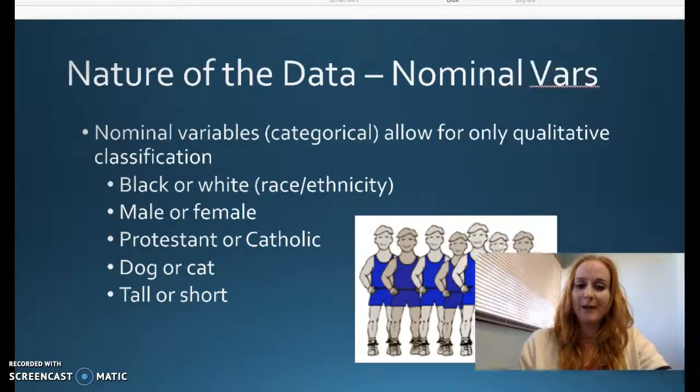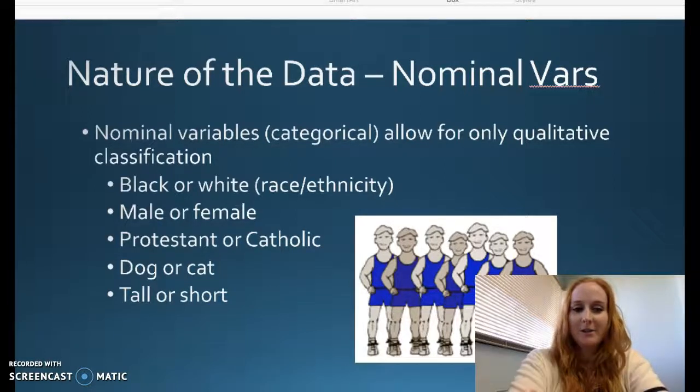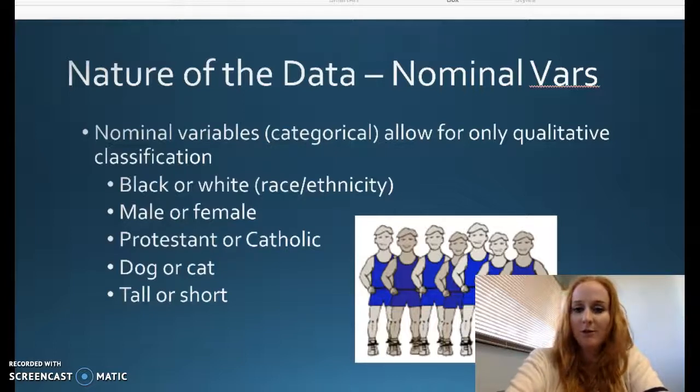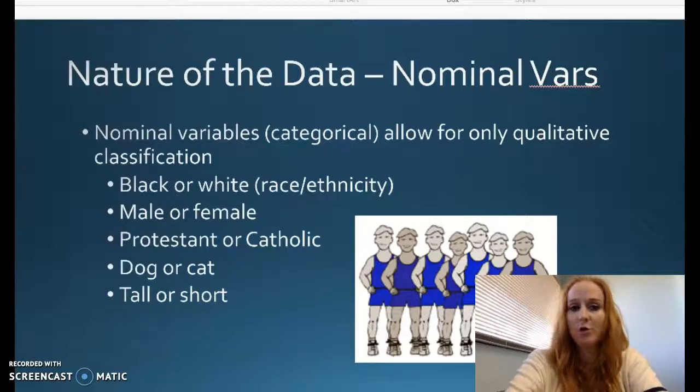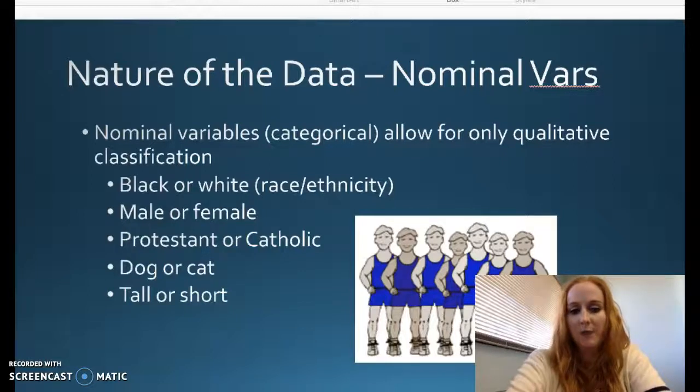First of all, we have nominal variables. Nominal variables are just a type of variable, a level of measurement called nominal, that allow for only qualitative classification. So we just describe the category or group that that person is in. Race ethnicity is an example of a nominal variable. Are you male or female? Are you this religion or this religion? It's any category, one versus another.